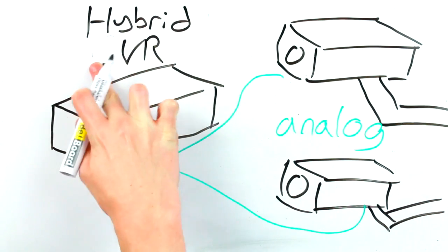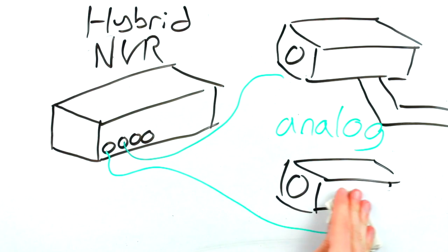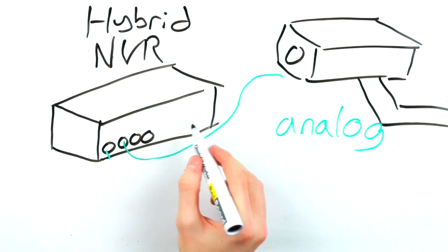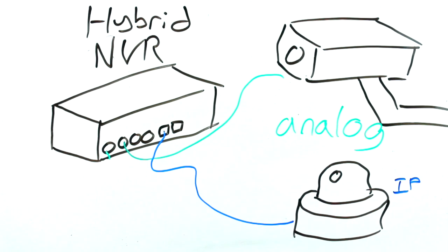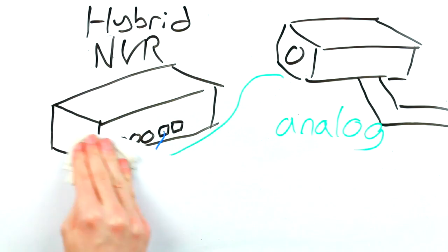But don't worry, because there are also a small range of what are called hybrid NVRs. These are recorders that have a mix of analog and network channels. This means that you can keep running a specified number of analog cameras whilst adding some new IP cameras to your system.